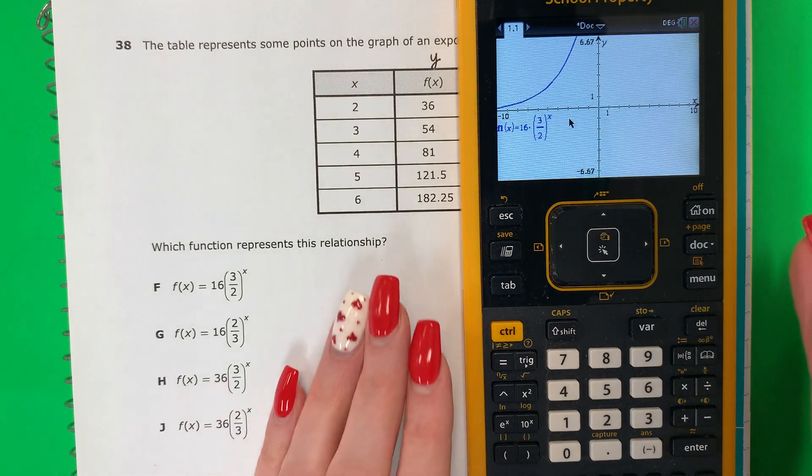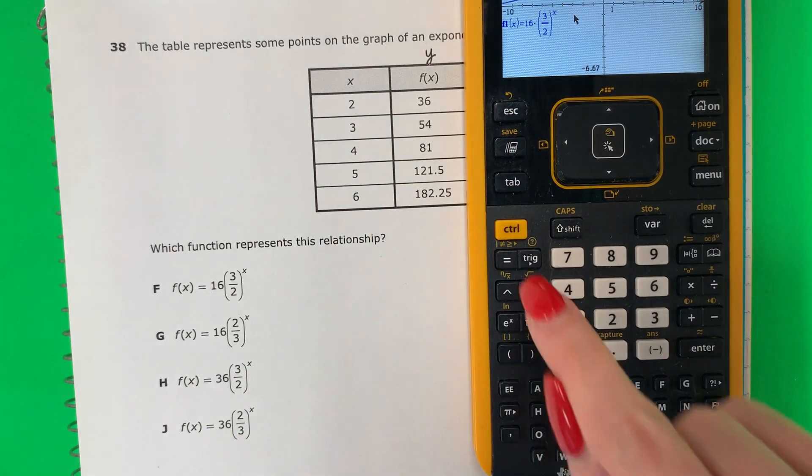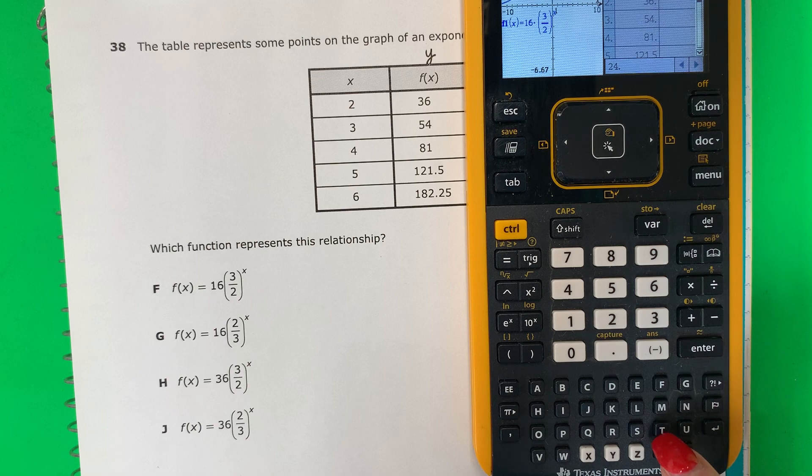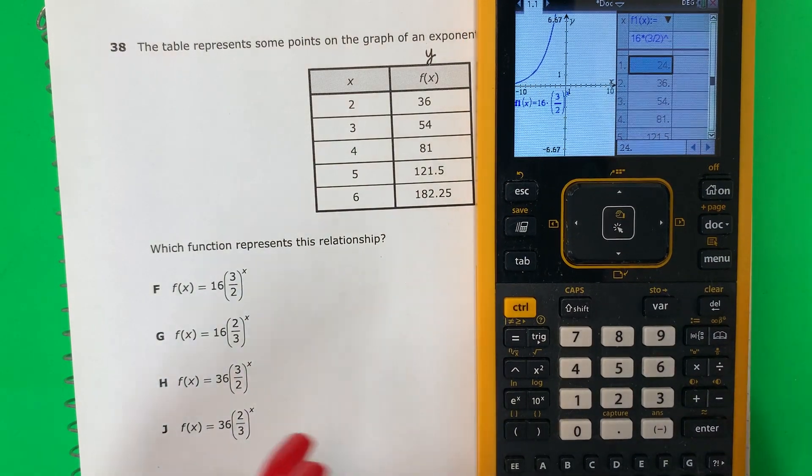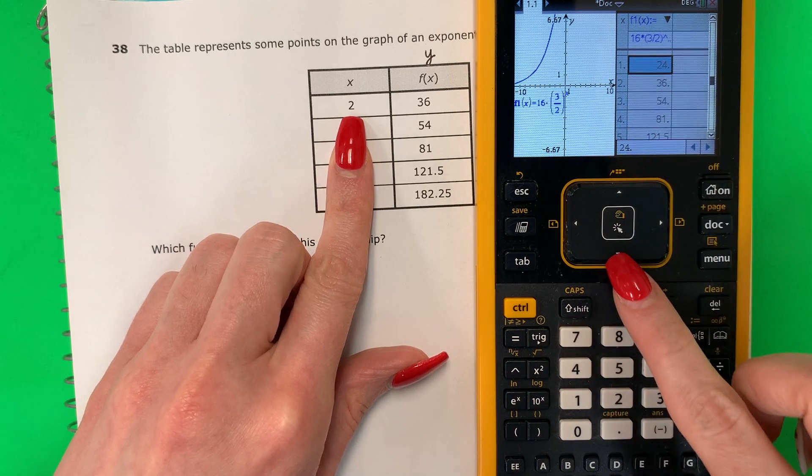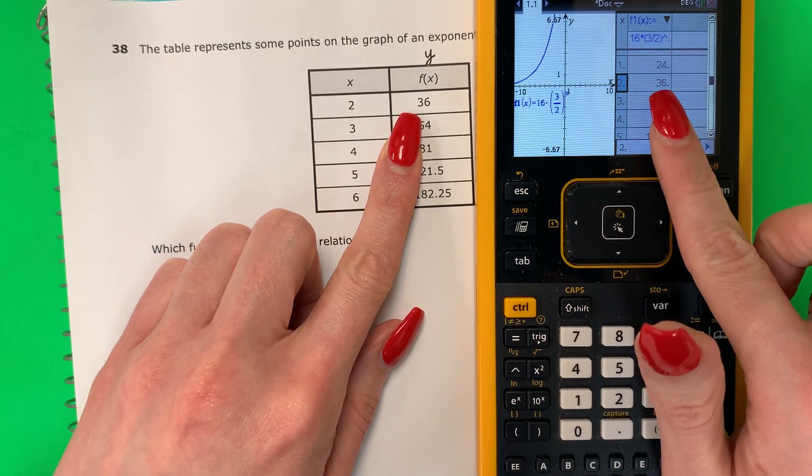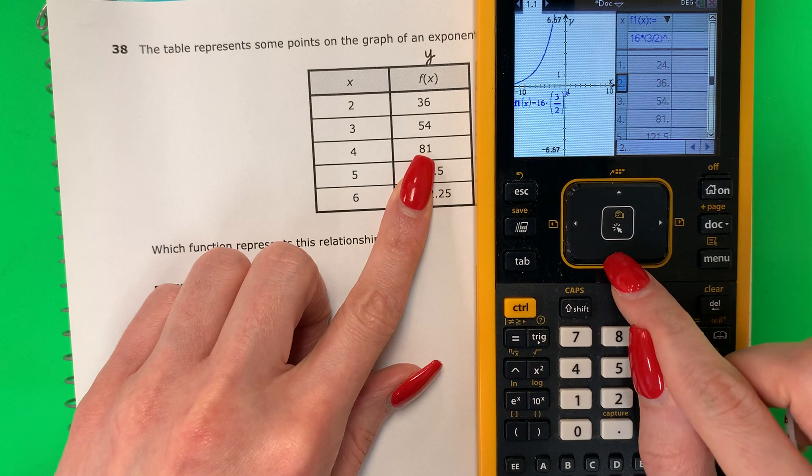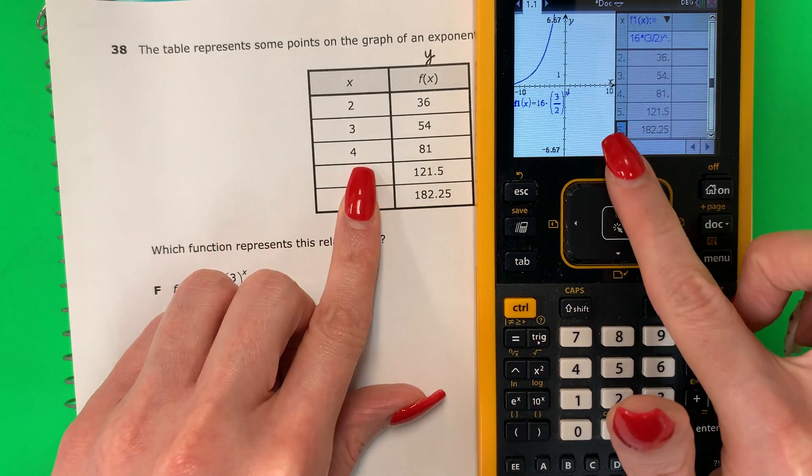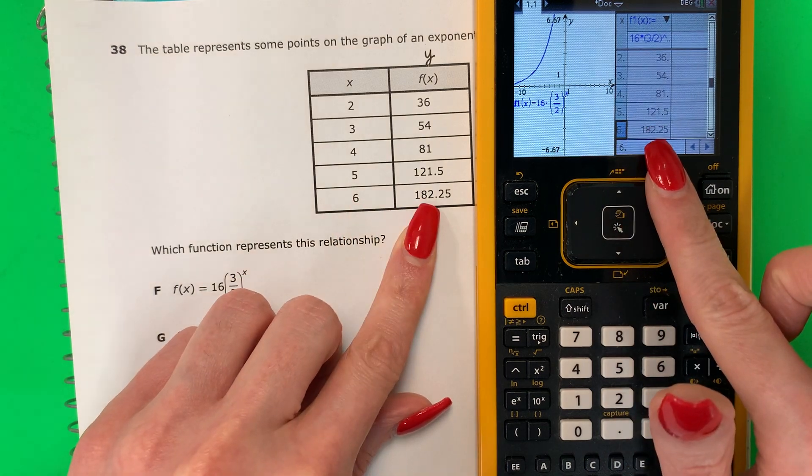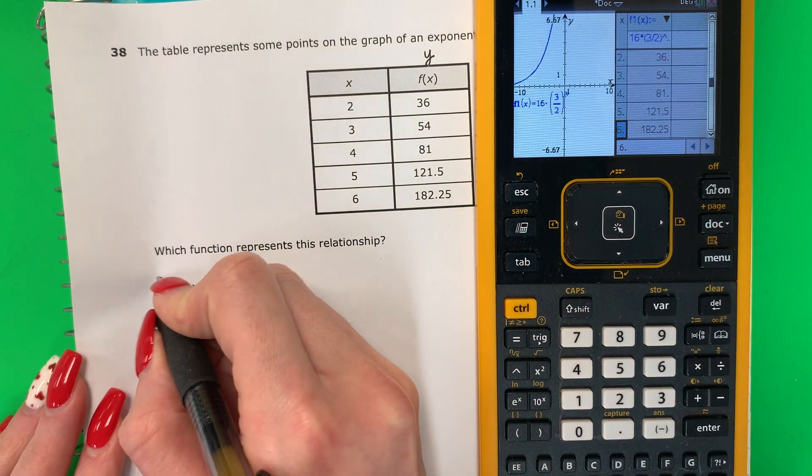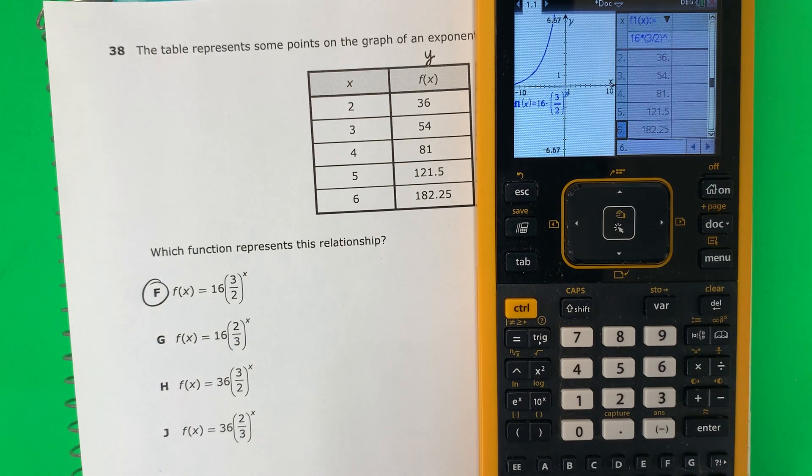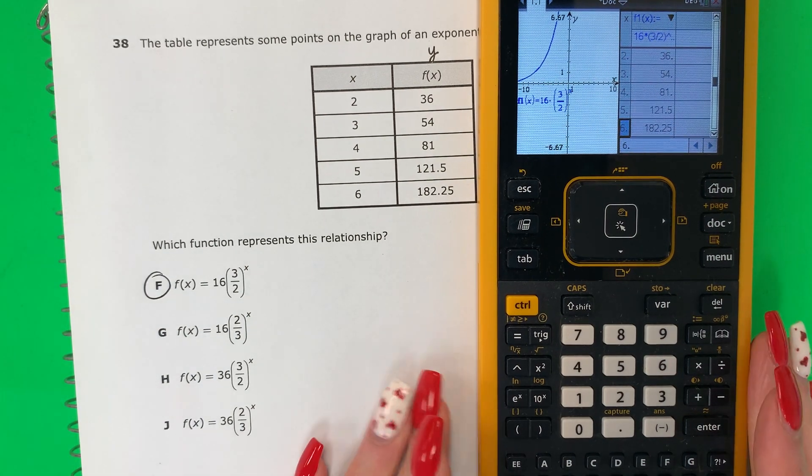Now to make the table, para crear la tabla, you're going to push control and then t. Control, t. And we're going to go ahead and compare. Y ahora vamos a comparar. So x 2, that's going to be here. x 2, 2 36, good. 3 54, good. 4 81, good. Check them all. Vamos a revisar todos. 5, 121.5. 6, 182.25. So this is my answer. Es mi respuesta. Because all of them are here. Porque todos de estos están aquí. Perfect.